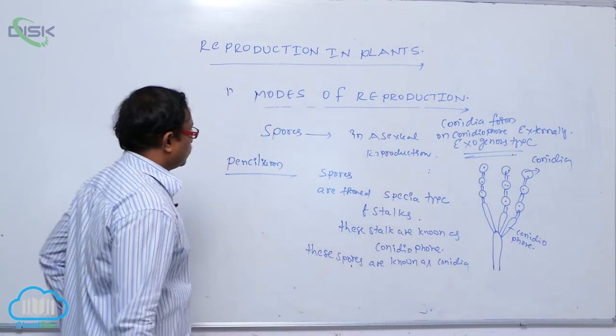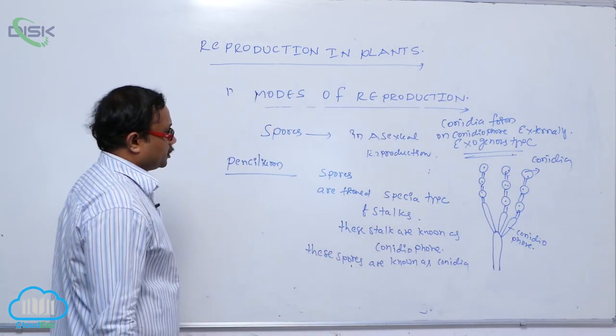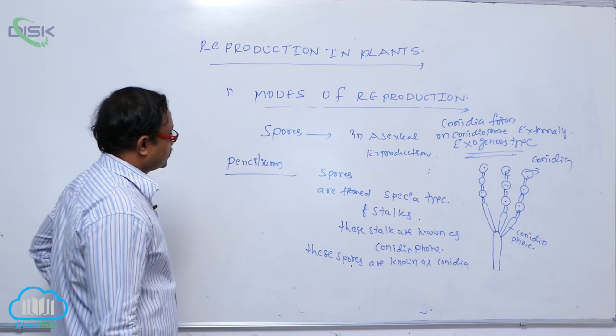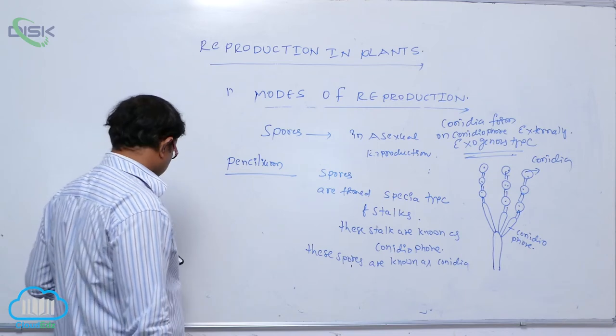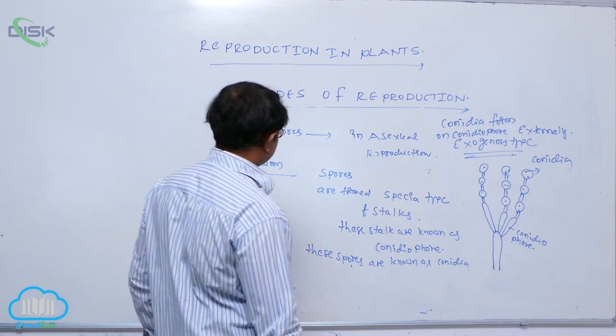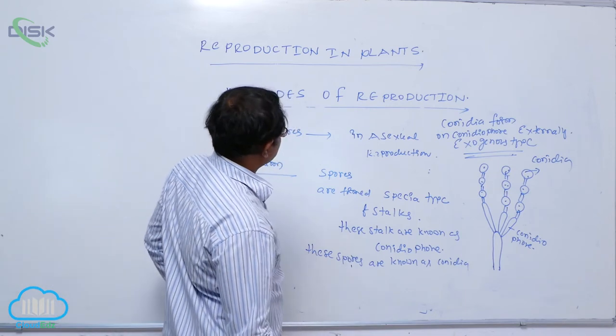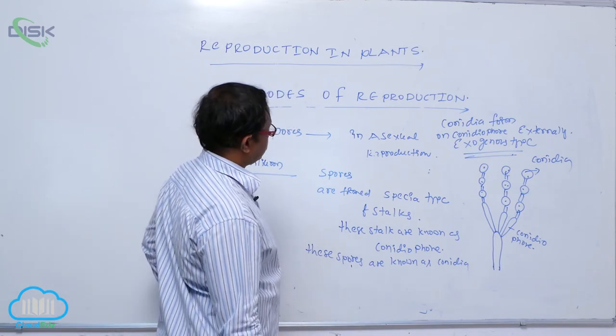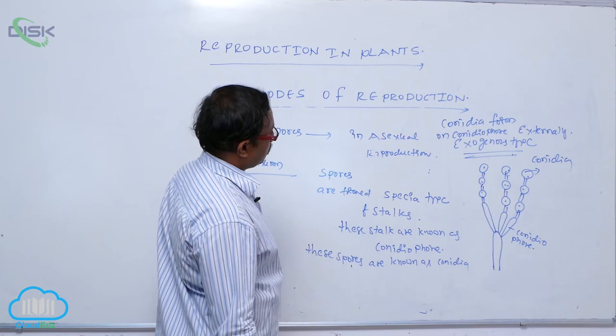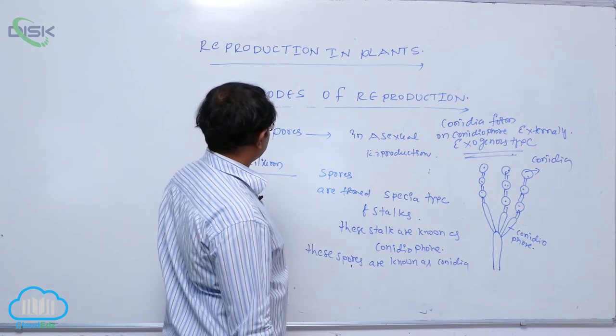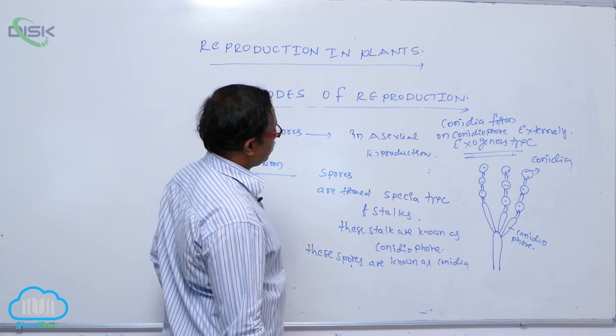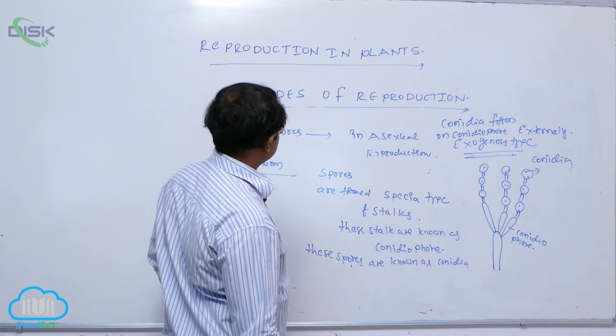So, to summarize: the endogenous type is observed in Rhizopus, and the second one — the exogenous type — is observed in Penicillium.